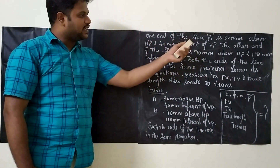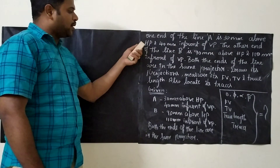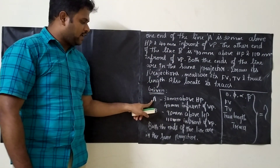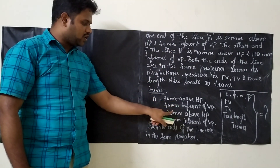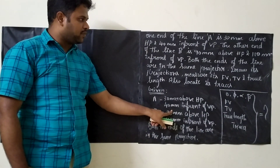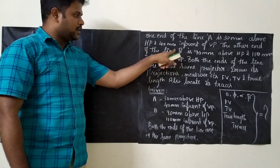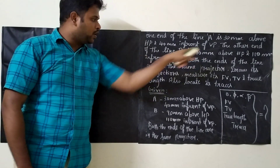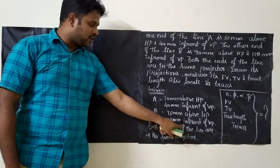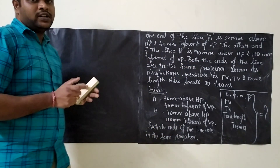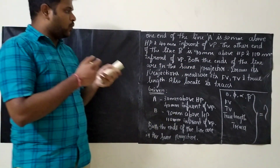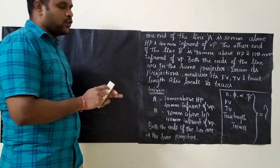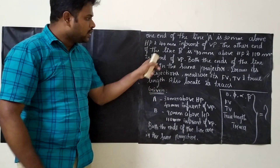One end of the line A is 30 mm above HP and 40 mm in front of VP. The other end of the line, that is B, will be 90 mm above HP and 110 mm in front of VP. So they have given the details for the line for both points A and B.